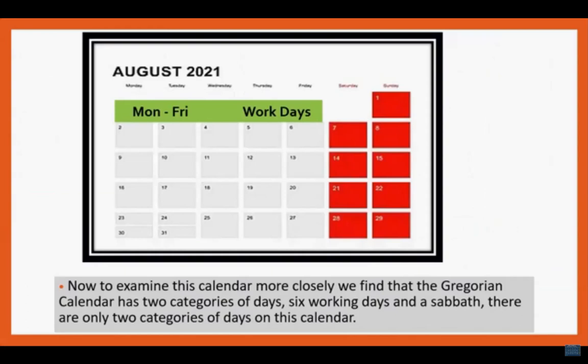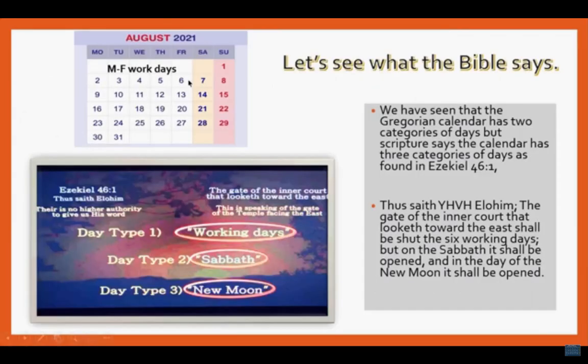The Gregorian calendar has work days and rest days on the weekend — only two types of days. But what does the Bible say? Scripture says the calendar has three categories of days, as found in Ezekiel 46:1.